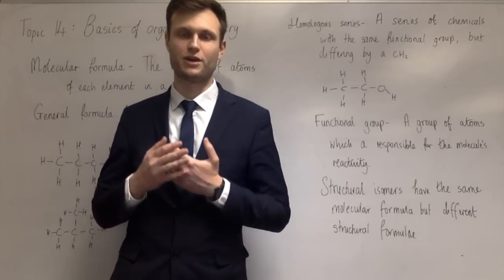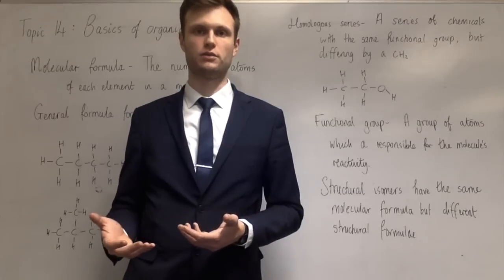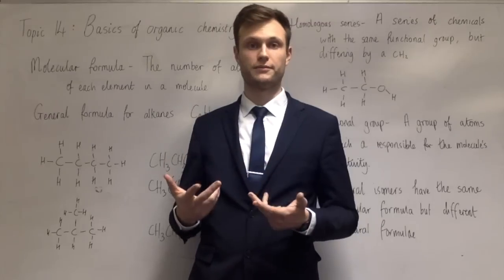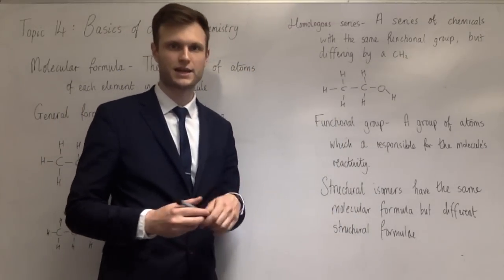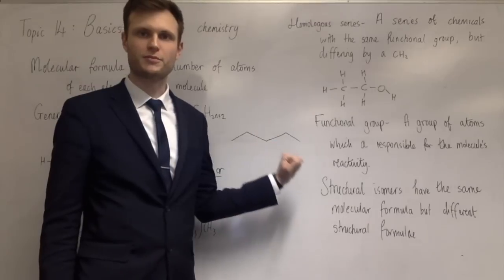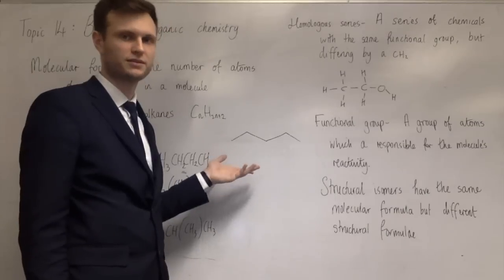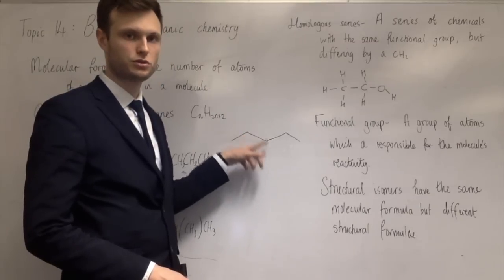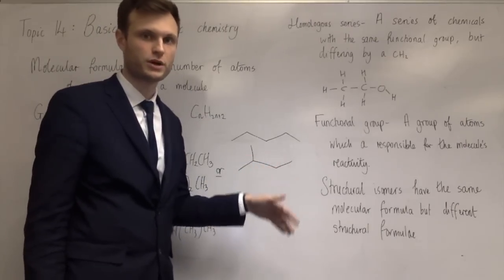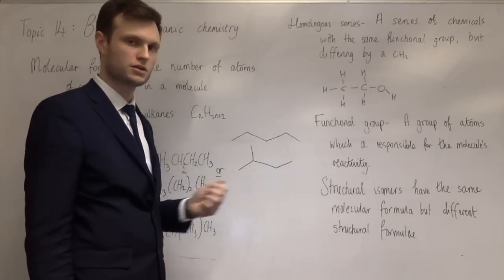It also says we need to be able to work out how many structural isomers a certain molecular formula has. So the classics are C5H12. How many molecules can you draw which have the molecular formula C5H12? And there are three. C5H12 automatically you think pentane. Then to work out if there are any more, what I do is take off one of the carbons and then try and put it somewhere else. If I take off the end carbon and put it on this end, it just makes the chain longer again. But if I put it on either of the two middle carbons, I get two methylbutane. So that's a structural isomer.